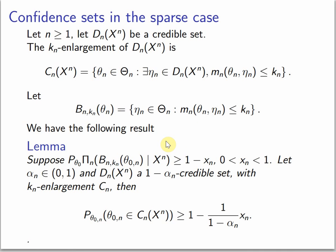Confidence sets in the sparse case. In the sparse case, we don't have convergence in one parameter, so we have to make our credible set larger in order to guarantee that it's a confident set. We allow all parameters that have a fraction of their labels different from a parameter in the credible set. Then if we have posterior convergence in this set with this rate, then we have that with this probability, the true parameter is in this enlarged credible set.